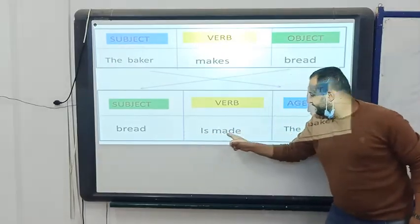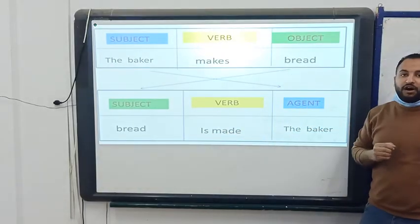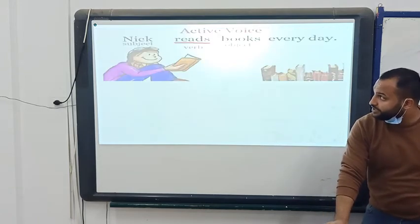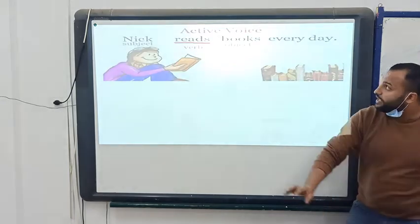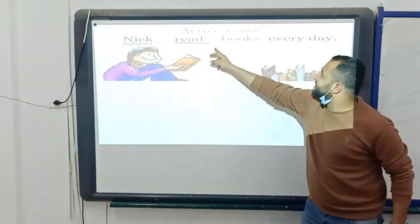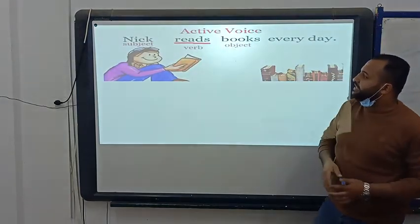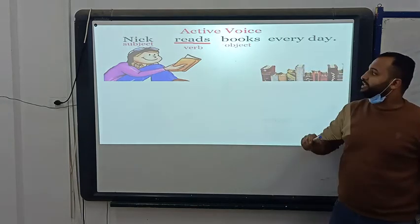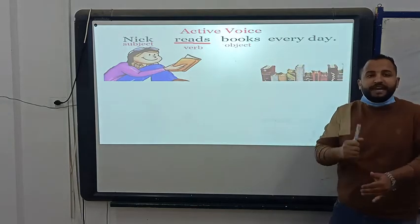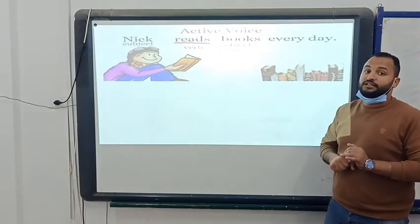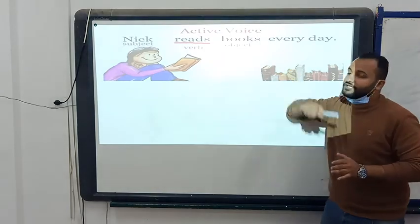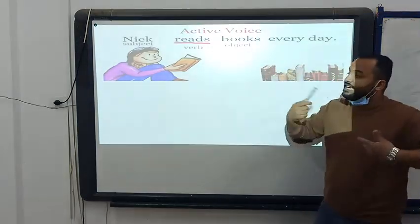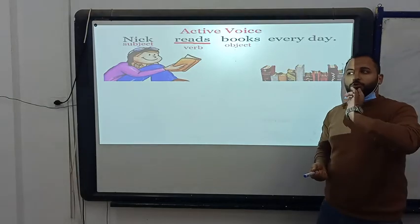So bread is made by the baker. Look at this: Nick reads books every day. Nick is the subject, reads is the verb, books is the object. I want to make it passive — I'll start with the object. Books is plural, so I use are. Books at first, then are.